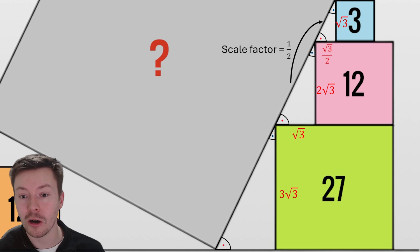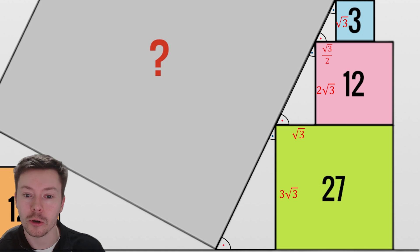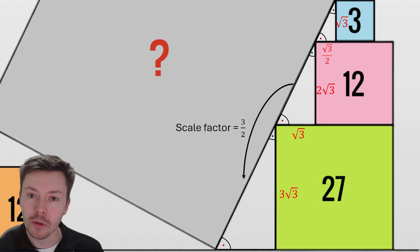If I do that with the base as well, I get a base of √3/2. Looking at the middle triangle and the bigger one, from 2√3 to 3√3, I divide by two and times by three, so the scale factor is 3/2. That means the base of this bigger triangle is 3√3/2.